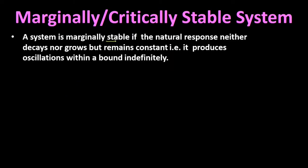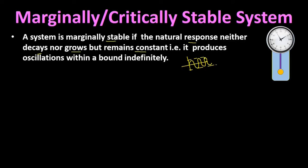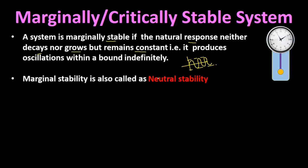A system is called marginally stable if the natural response or output response of that system is neither decaying nor growing in nature, but remains constant. That is, the marginally stable control system produces oscillations within a bound indefinitely with constant magnitude and frequency. This type of response is called marginally stable response because the oscillations are not decaying and they oscillate indefinitely. An example of such a system is a frictionless pendulum. Marginal stability is also called neutral stability because it comes between instability and stability.